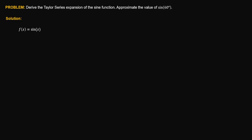To use the Taylor series expansion, we need to know the first, second, third, and nth derivative of that function. So let's compute the first derivative. The first derivative of the sine function is cosine, so f prime of x is equal to cosine x. Then the second derivative is equal to negative sine x. The third derivative is equal to negative cosine x. The fourth derivative is equal to sine x. The fifth derivative is equal to cosine x.